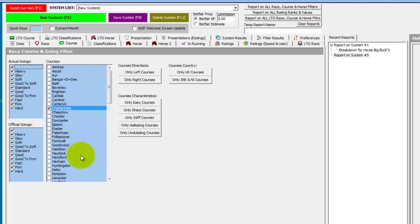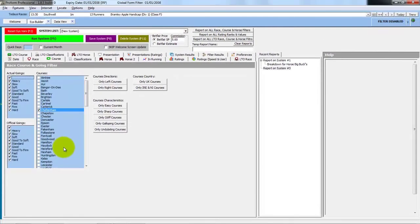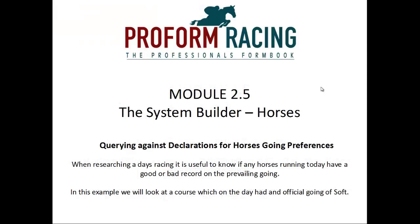So that's a quick look at Horses for Courses on a per course basis. Moving on to querying against declarations for horses' going preferences. When researching a day's racing, it is useful to know if any horses running today have a good or bad record on the prevailing going. In this example, we will look at a course which on the day had an official going of soft.